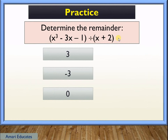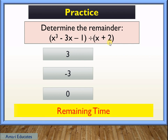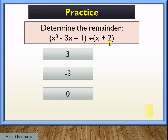Next: determine the remainder of the quantity of x squared minus 3x minus 1 when divided by x plus 2. Pause the video if you need more time. The correct answer is minus 3.